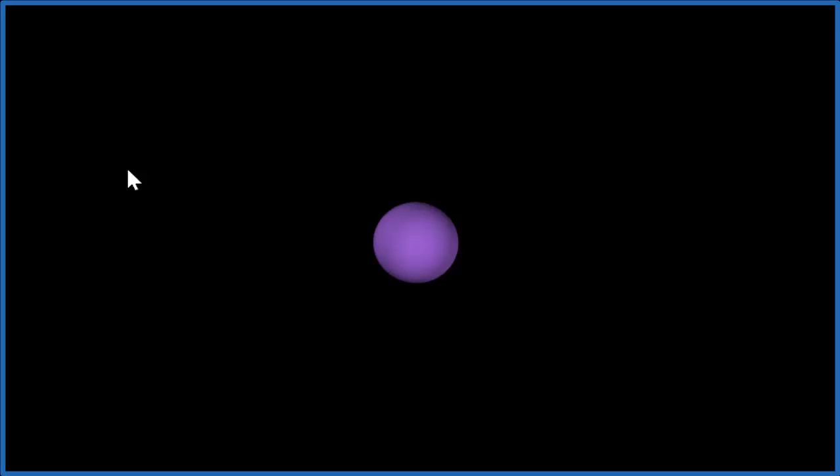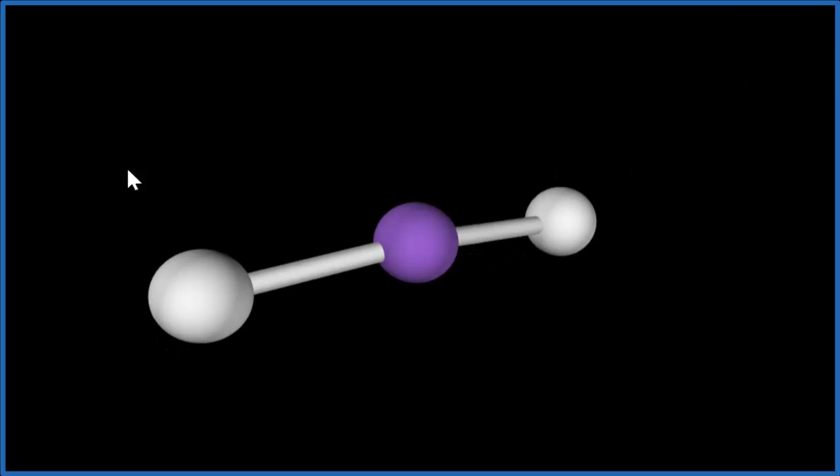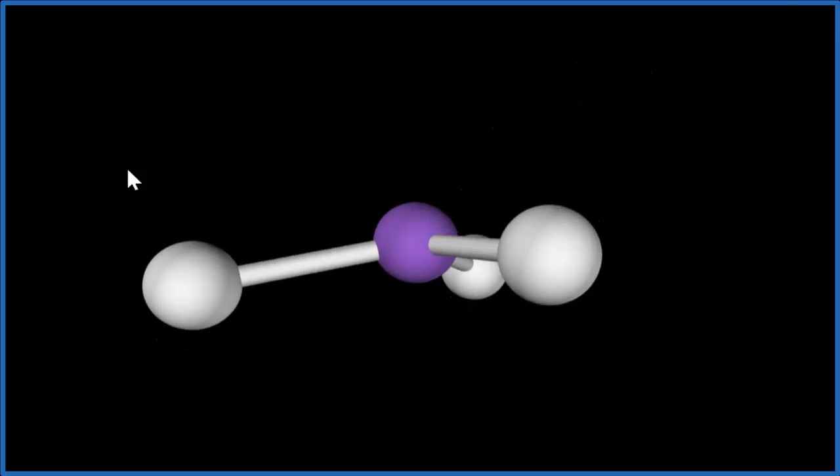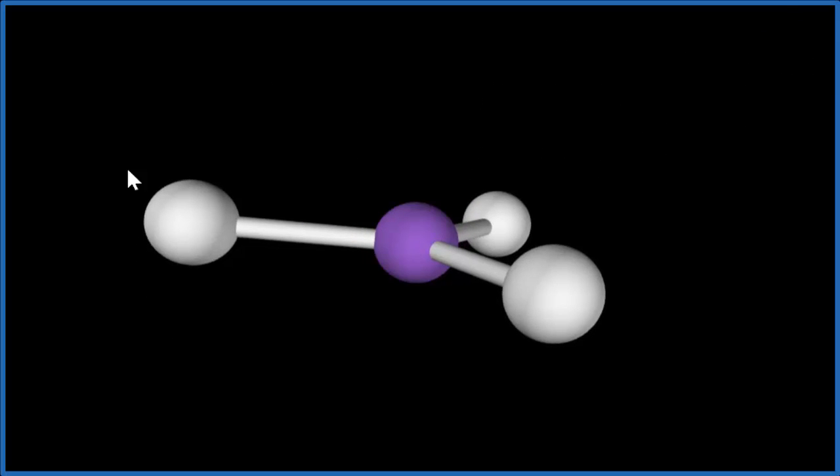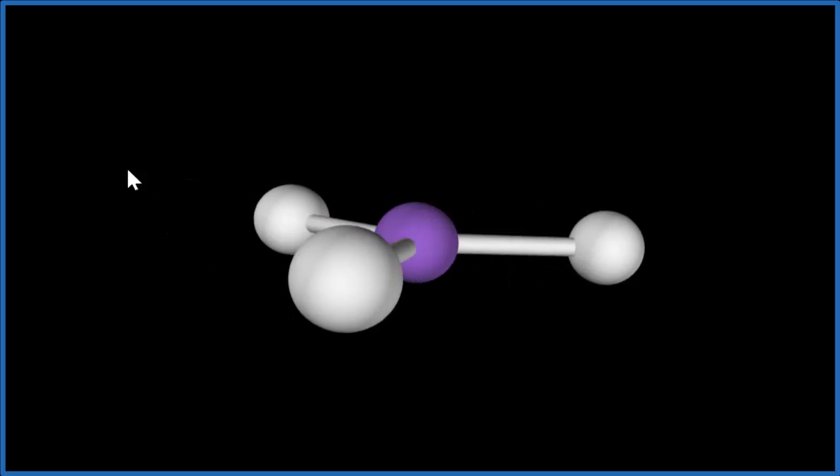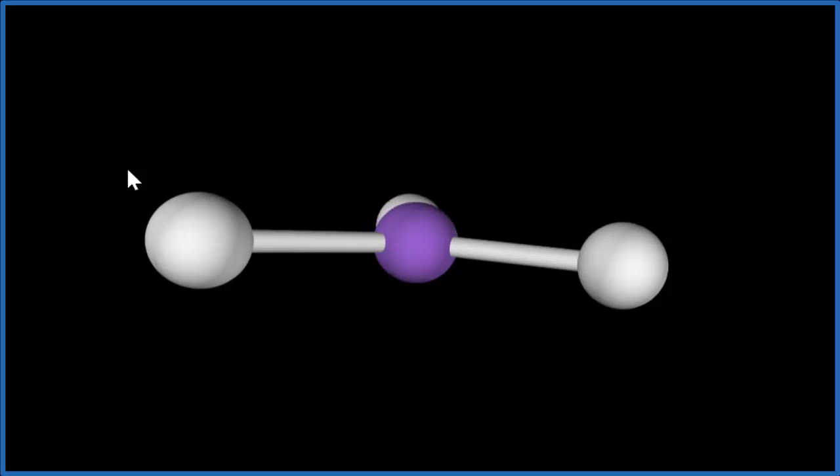Let's add three fluorines. One, two, three. You see they spread out. Right now we have this trigonal planar. Everything's in one plane. That's the molecular geometry and the electron geometry.